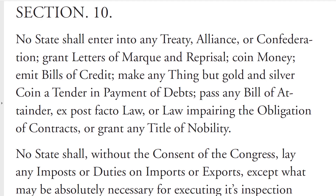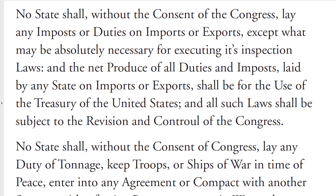Section 10. No state shall enter into any treaty, alliance, or confederation, grant letters of marque and reprisal, coin money, emit bills of credit, make anything but gold and silver coin a tender in payment of debts, pass any bill of attainder, ex post facto law, or law impairing the obligation of contracts, or grant any title of nobility. No state shall, without the consent of the Congress, lay any imposts or duties on imports or exports, except what may be absolutely necessary for executing its inspection laws, and the net produce of all duties and imposts laid by any state on imports or exports shall be for the use of the Treasury of the United States, and all such laws shall be subject to the provision and control of the Congress.